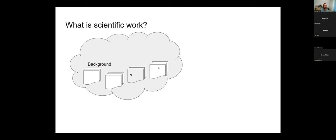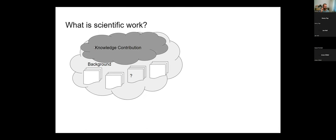If we have found something missing in the background — the knowledge gap — we can describe it like this: some people have done this thing, some others have done that thing, but no one has done what I'm going to do. That is how you present a research gap. What you intend to do I call the knowledge contribution. The knowledge contribution doesn't need to cover the entire research gap. We can have multiple students working on the same research gap but doing different knowledge contributions.